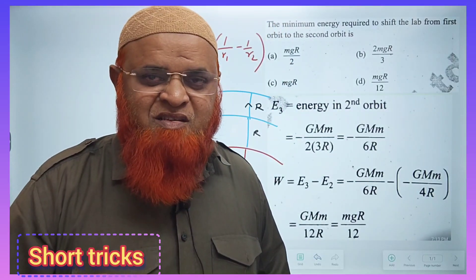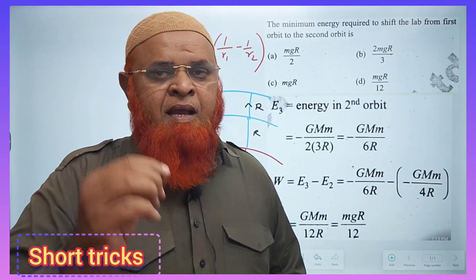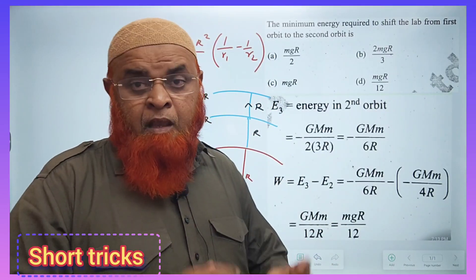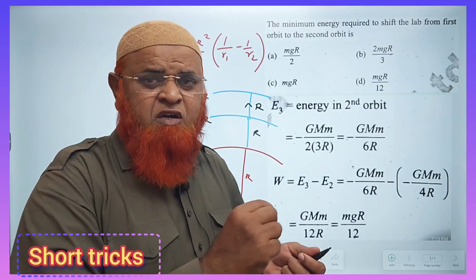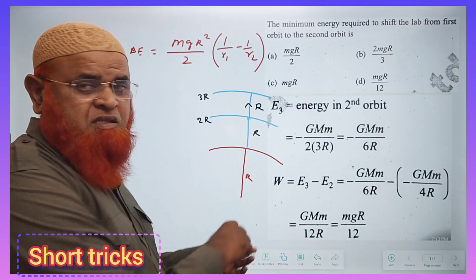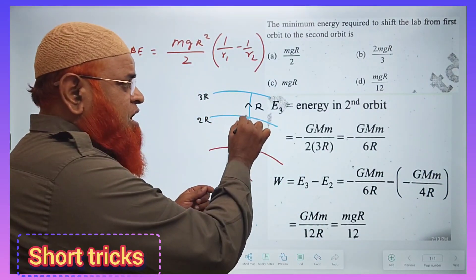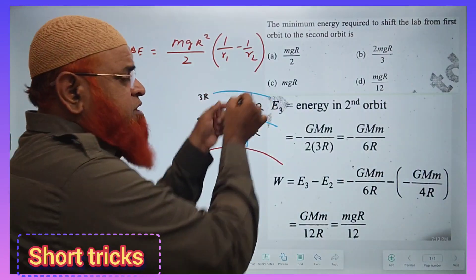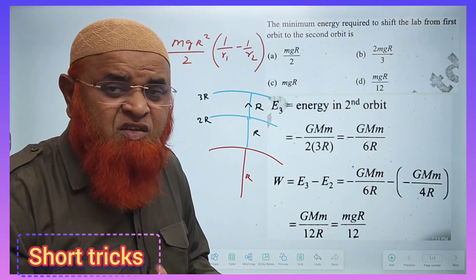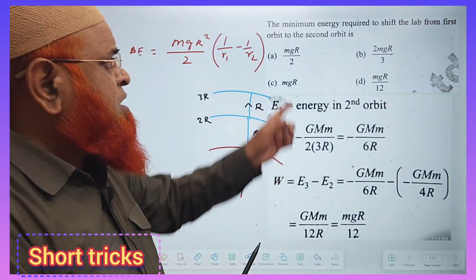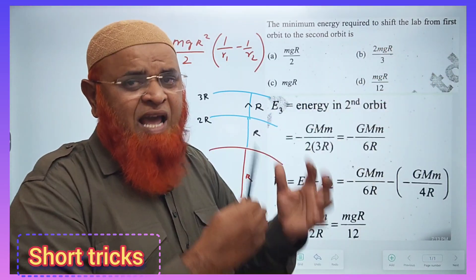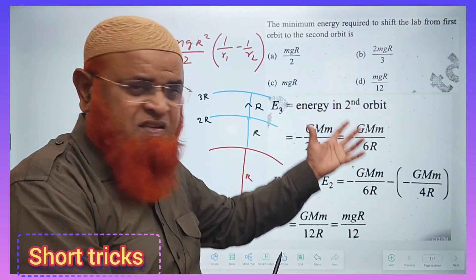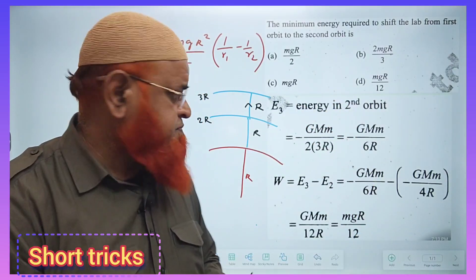Today I am going to discuss a wonderful short trick. When a satellite has been transferred from the first orbit to the second orbit, how much energy is required? The minimum energy required to shift from the first to the second orbit — these are four options, and this is the textbook method given in the textbooks.